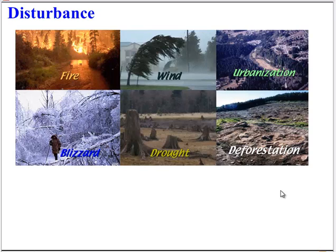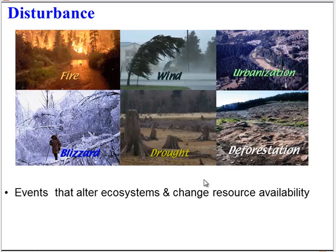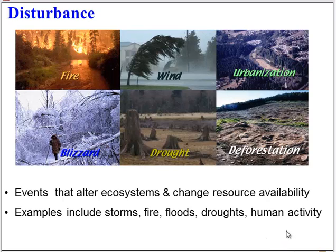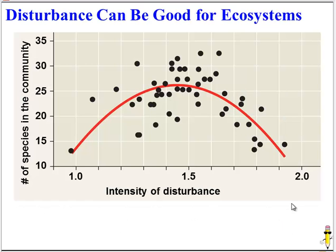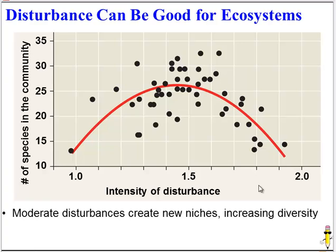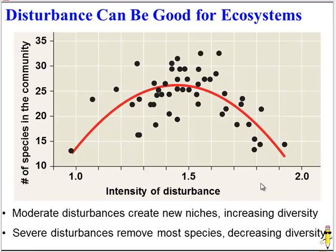What can cause succession? Disturbances can lead to succession. Disturbances are events that alter ecosystems and change resource availability, and these can include human activity as well. If they're severe enough, they can wipe out most of the community and lead to succession. However, disturbance can actually be good for ecosystems. Looking at a graph comparing disturbance intensity to species diversity: when there's very little disturbance, species diversity is quite low. When the intensity is intermediate or moderate, there are a lot of species — which is good. But really severe disturbances can remove most species, decrease diversity, and perhaps lead to succession.